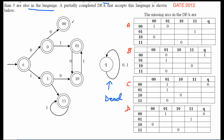The state labeled '00' means we have read two consecutive zeros so far. If we read one more zero, we must go to the dead state Q. So the first transition we can determine for sure is: from state '00', on reading zero, go to the dead state Q.